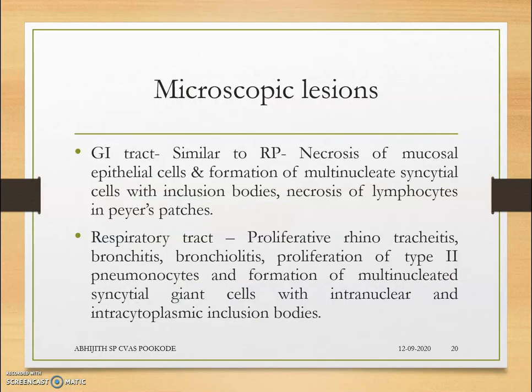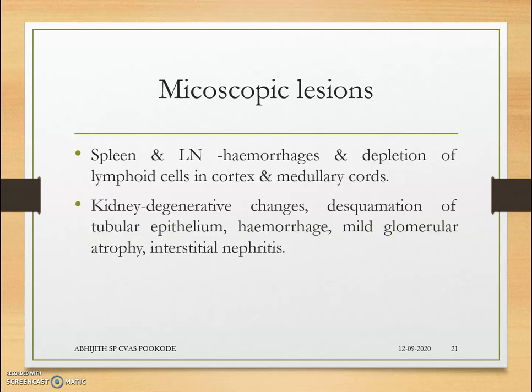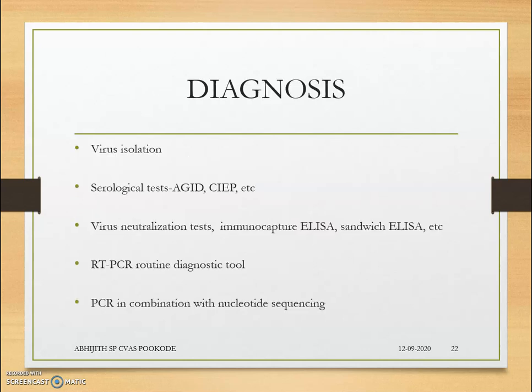On microscopy, the causative Paramyxovirus shows intranuclear and intracytoplasmic inclusion bodies in GI tract cells and type 2 pneumocytes. Syncytia with inclusion bodies appear in Peyer's patches. The spleen and lymph nodes show depletion of lymphoid cells in the cortex region, causing lymphopenia. In the kidney, hemorrhages, small spots, urate crystal deposition, tubular epithelium degeneration, and interstitial nephritis can be seen.